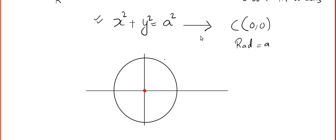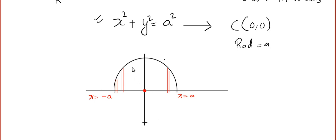It is clearly mentioned the region is above the x-axis, so we erase the part below it. Clearly x goes from −a to a. Here x = −a on the left and x = a on the right. Using a vertical strip, the strip moves from −a to a.